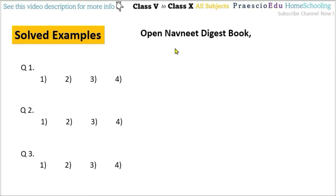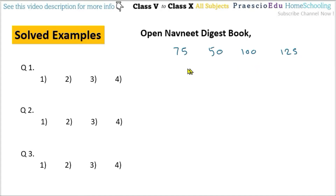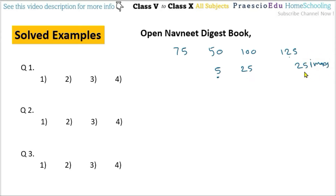So there is neem 75, jamun 50, eucalyptus (Nilgiri) 100, and mango 125. We have to find out the HCF — a common number that can be a multiple of all these numbers. There is 25 and also 5. But if we choose 5, for 125 we would have to show 25 images, which is too many for counting. So we choose 25 — giving 5, 4, 2, and 3 images respectively. So 25 is the correct answer, option number 3.